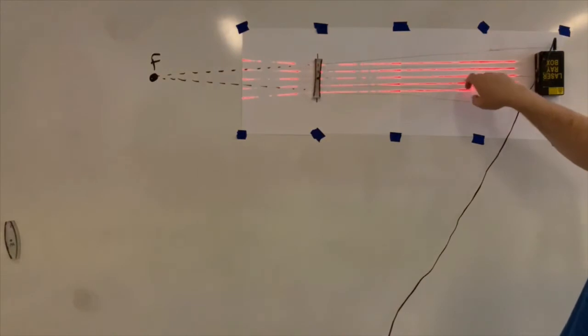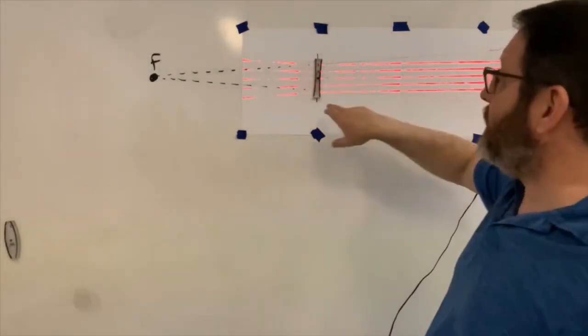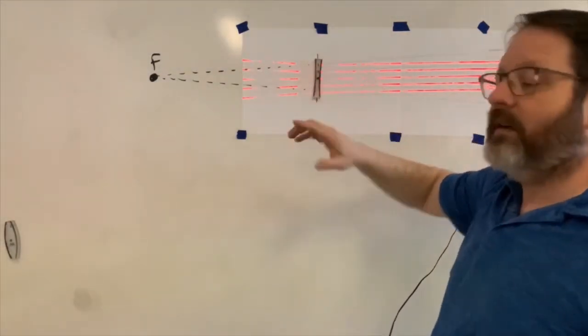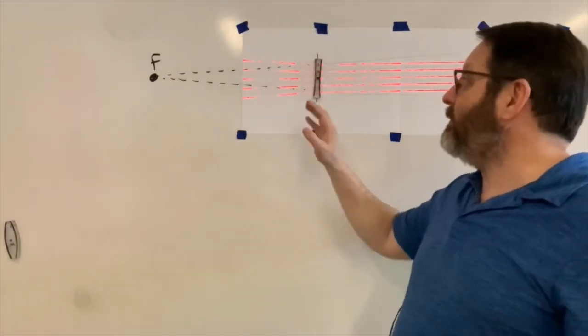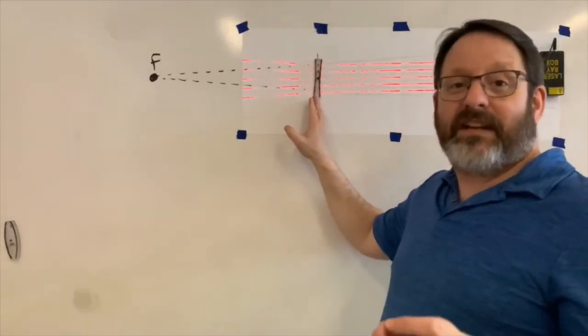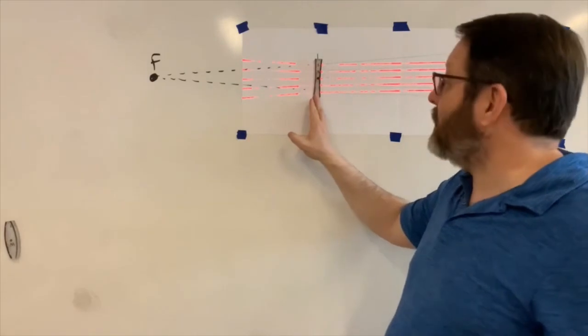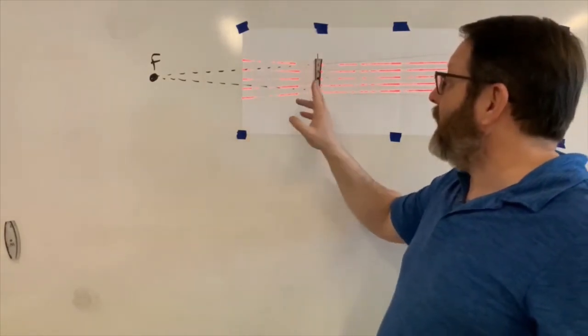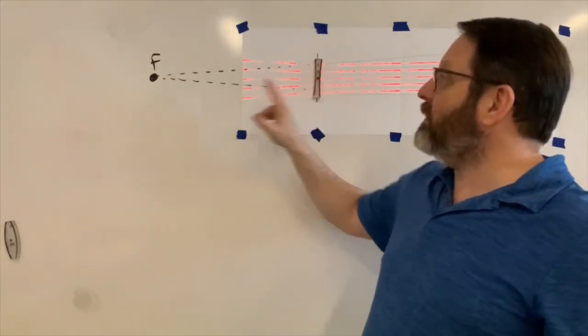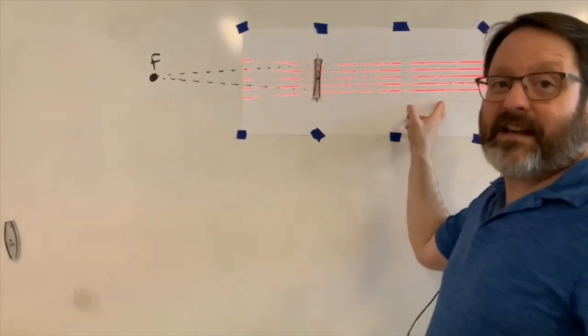So the lenses, both convex and concave, or converging and diverging—either one is a good way to describe them—both have a midpoint that's important and focal points on each side that are important.